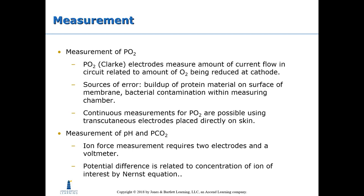Continuous measurements for pO2 are possible using transcutaneous electrodes placed directly on the skin. The measurement of pH and pCO2 uses ion-selective measurement requiring two electrodes and a voltmeter; the potential difference is related to the concentration of ions of interest and the Nernst equation.